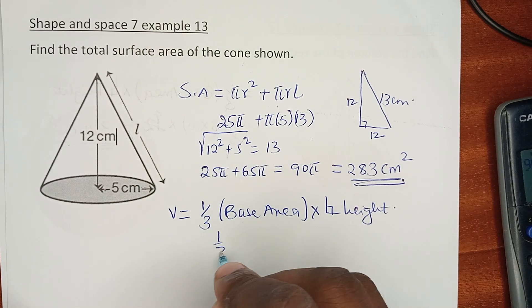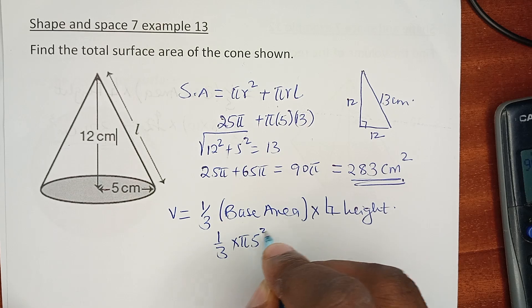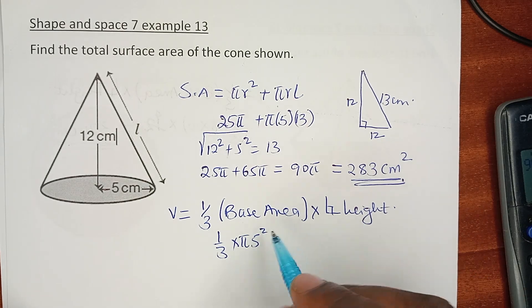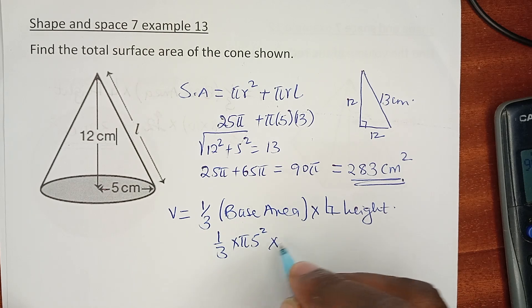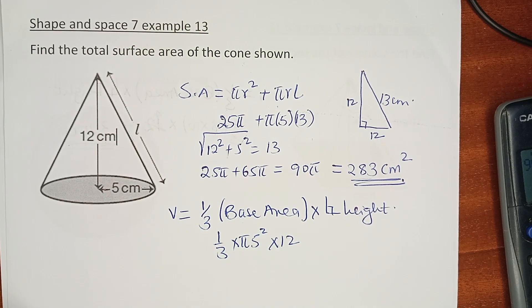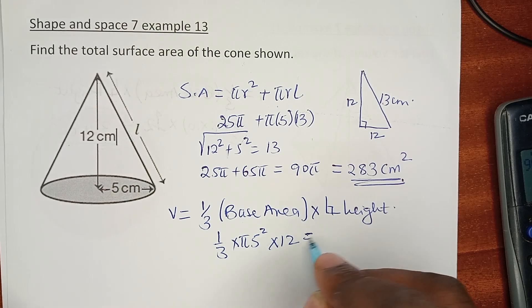We are going to have 1/3 times π(5²), or rather 25π base area—the base is circular—times 12 which is the perpendicular height. Here we are going to have...